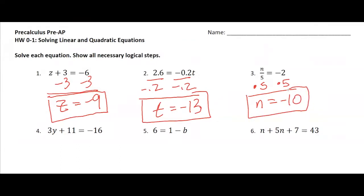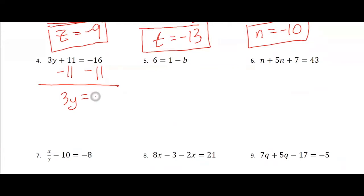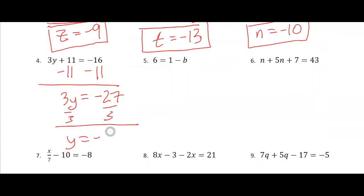We're off to a good start. Number 4, we start getting some two-step equations. We just want to make sure to do the addition and subtraction before the multiplication and division. So we're going to subtract 11 on both sides, and we get 3y equals negative 27. Then we've got to divide both sides by 3, so I should get y equals negative 9.